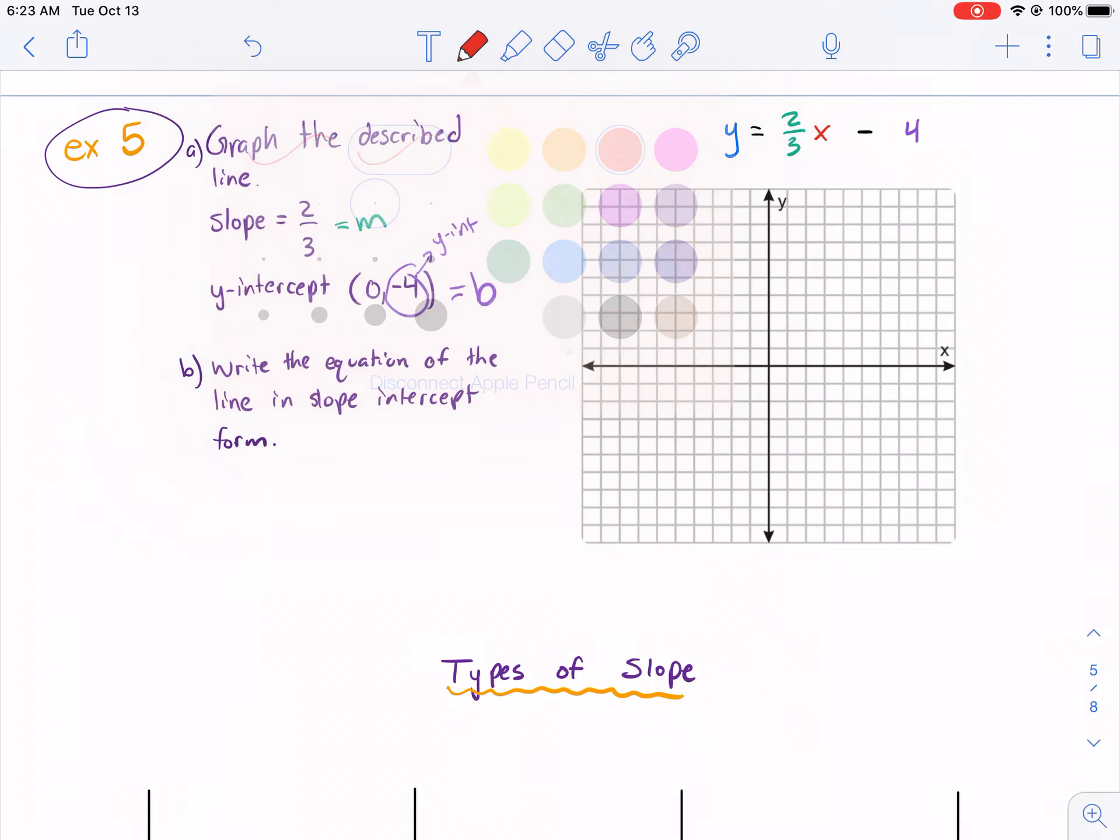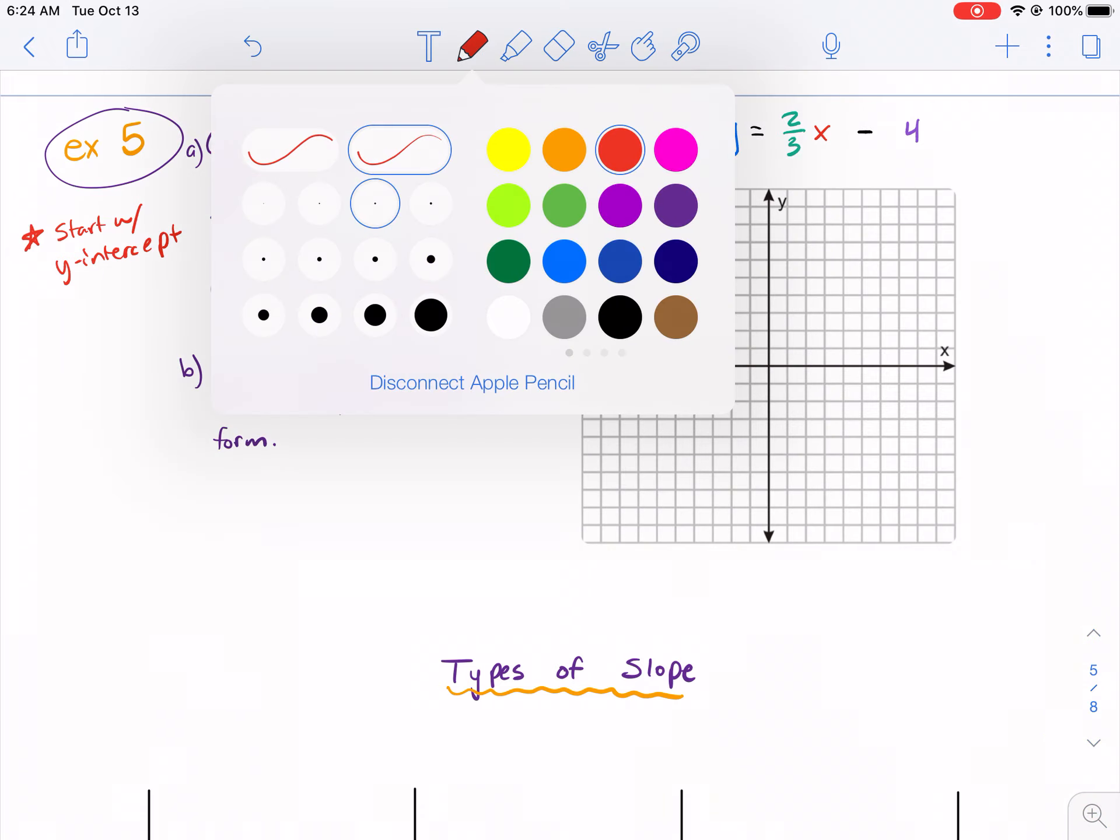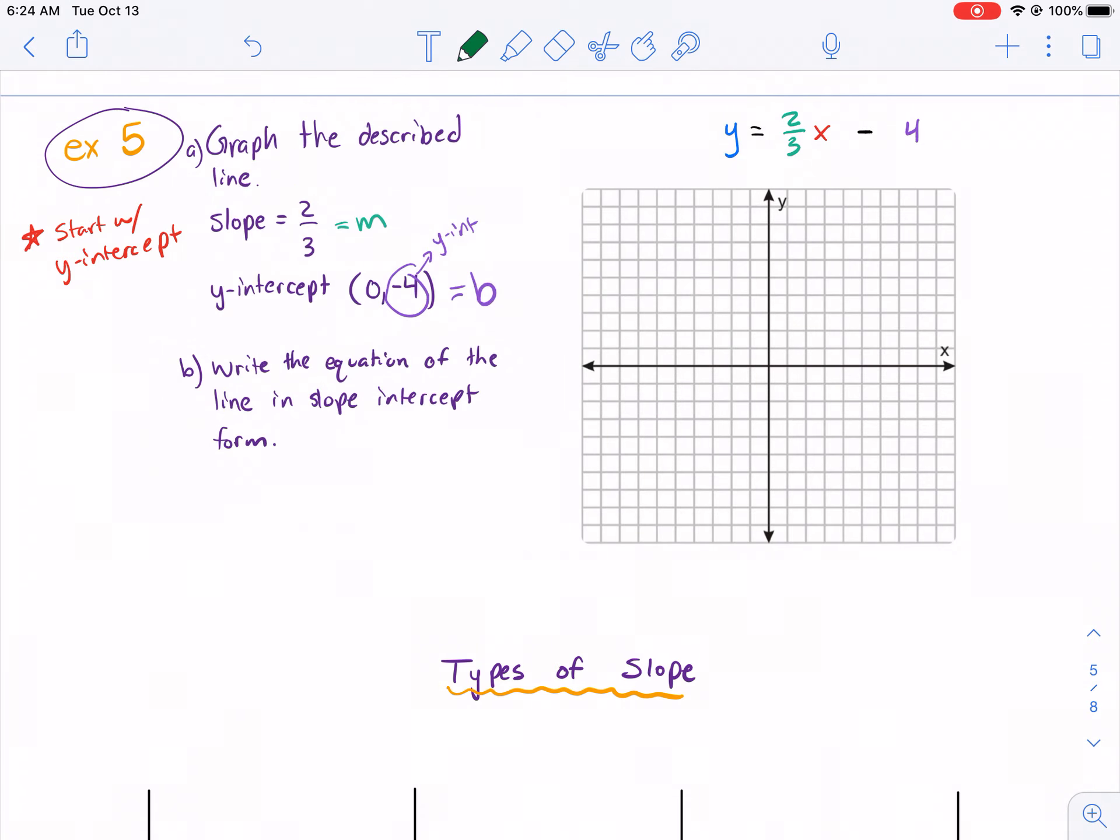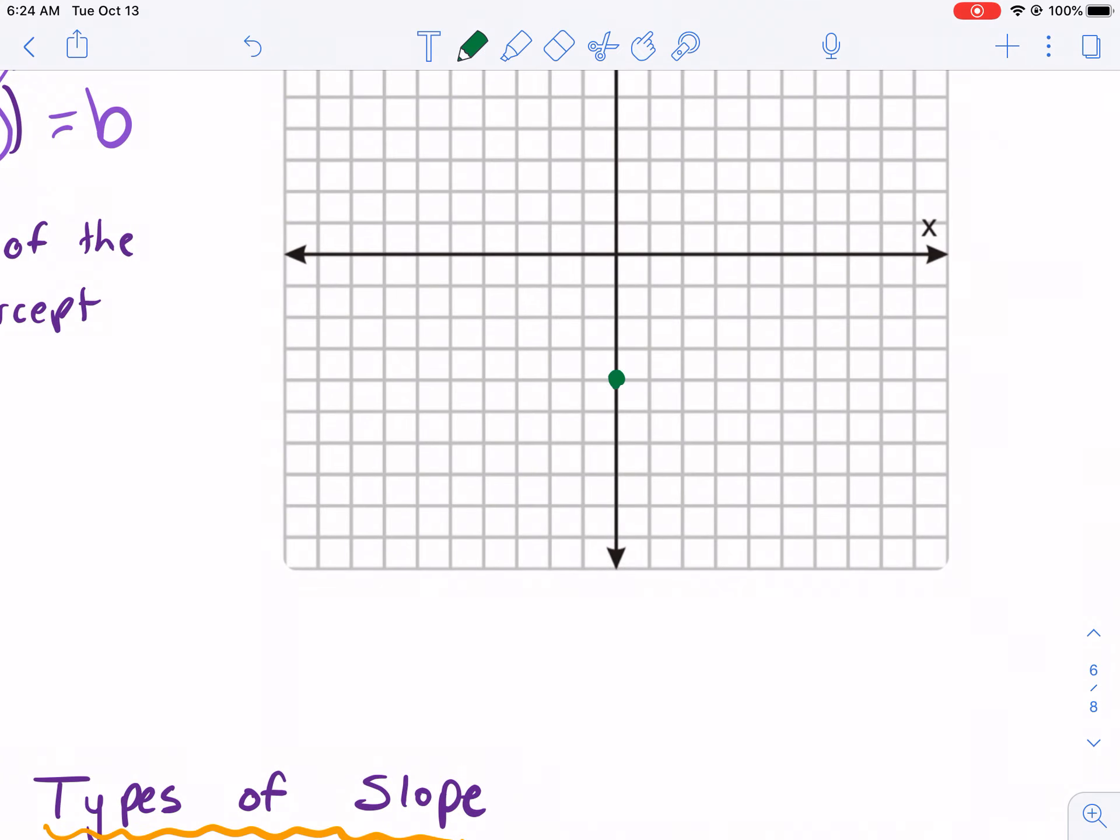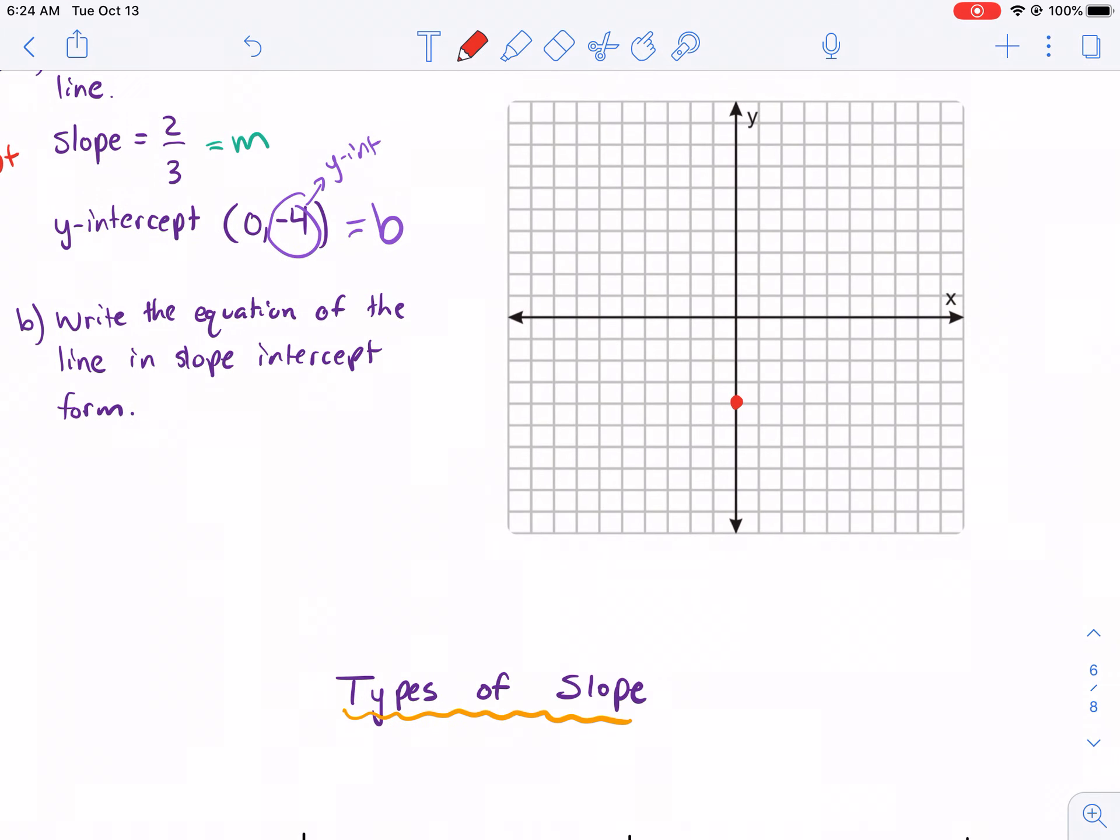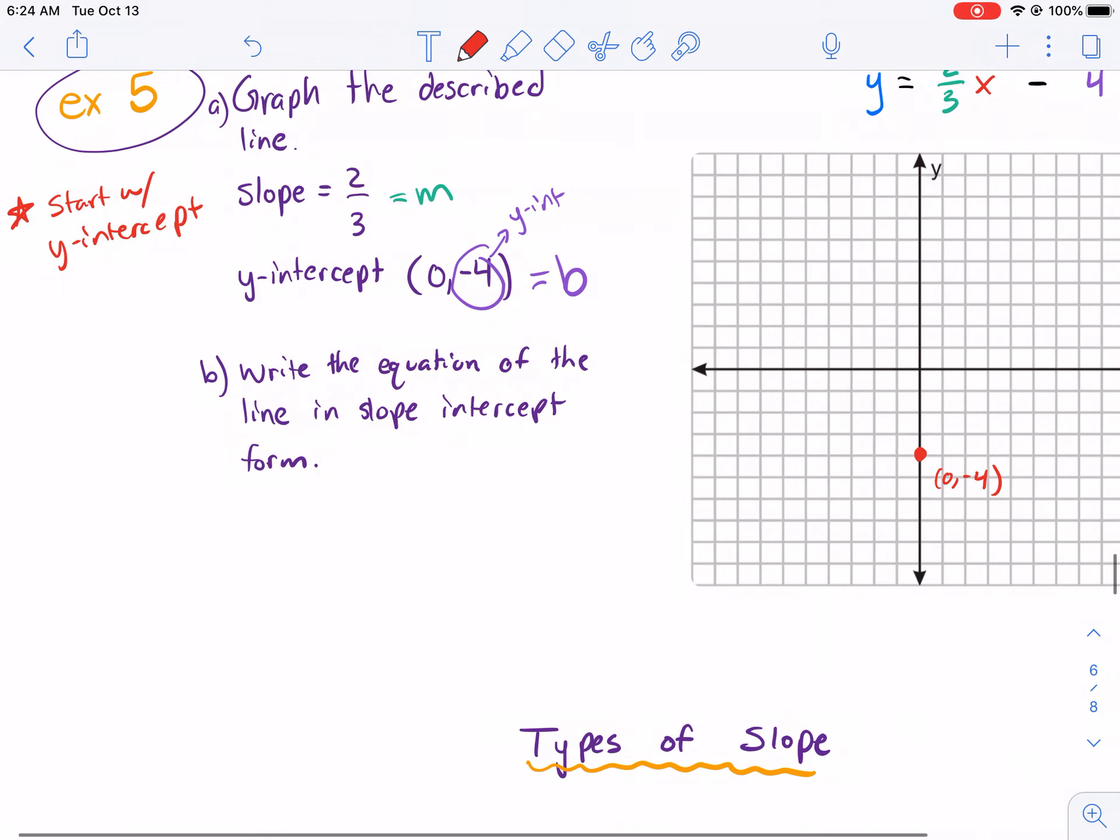Now, how do we graph this? Pretty simple process. The first thing we always want to do if we're graphing is start with the Y-intercept. That's going to be your first point. You only need two points to graph a line. So, you always want to start with your first point, which is just a gimme. It's really easy. We always start with the Y-intercept. Let's make it red. It stands out a little bit more. So, I just go down to negative 4 on the Y-axis, and I'll make a dot. That's the point (0, -4). If it was a positive 4, you would go up. If it's negative 4, you go down.